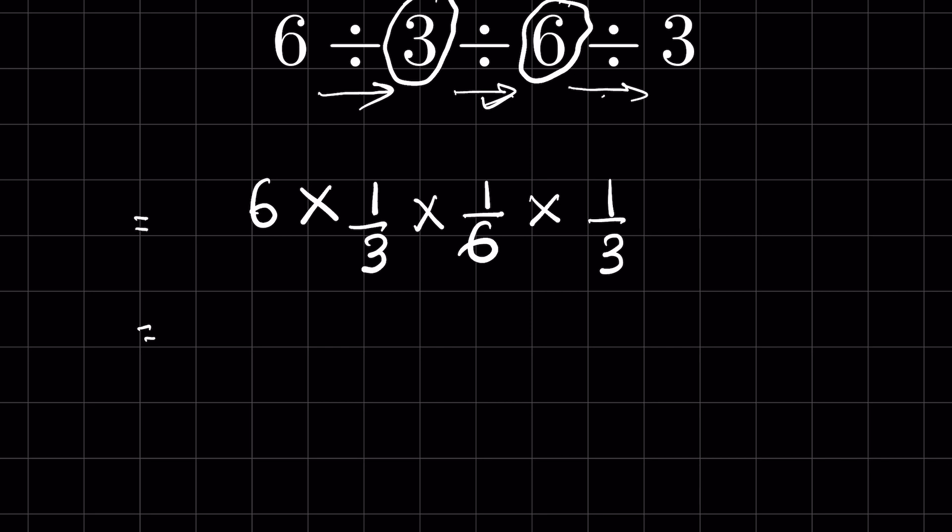Now we can cross divide the numbers here, cross cancel the like factors. 6 and 6 gets cancelled, so this is equal to 1 upon 3 times 3 is 9, so 1 upon 9 is the answer.